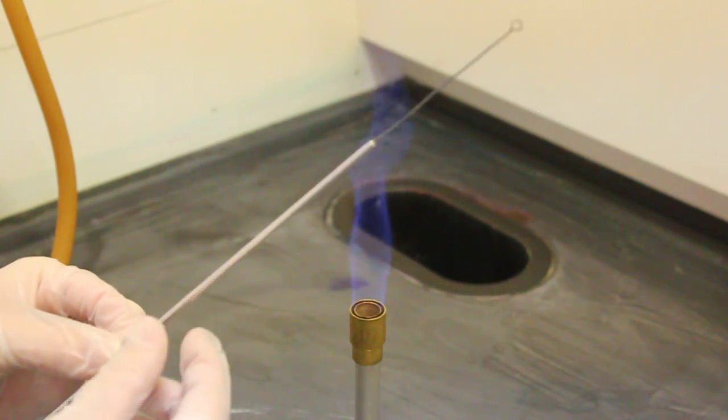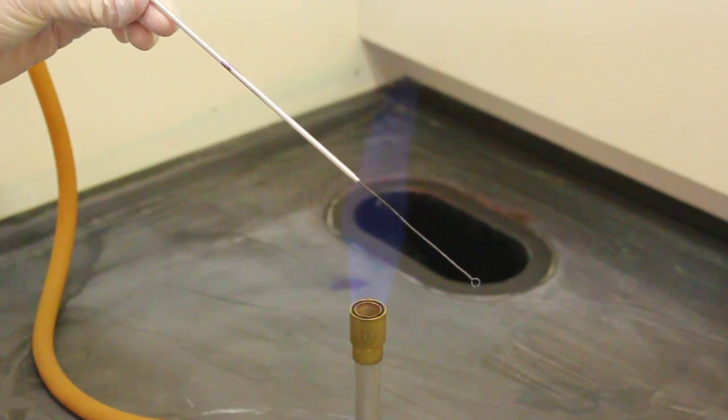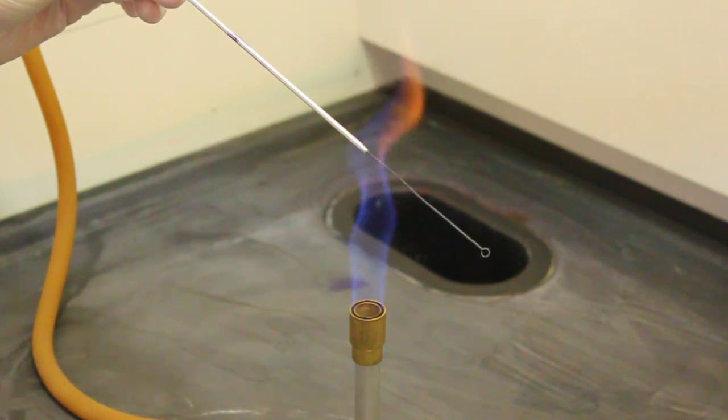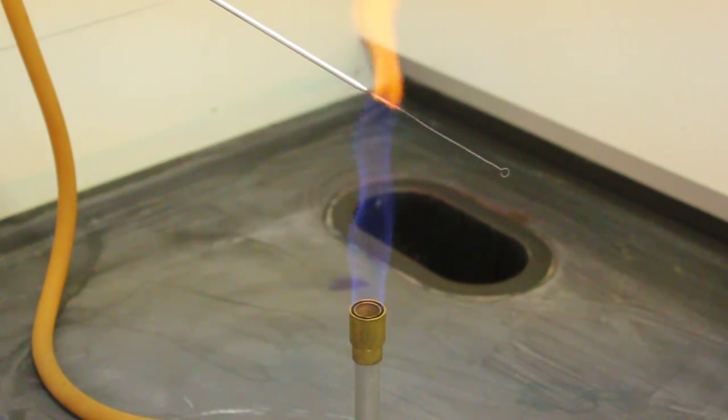When you are first beginning to incinerate your loop, you place the end of the loop that is closest to your hand in the flame. You need to find the location in the fire which turns the wire bright orange.